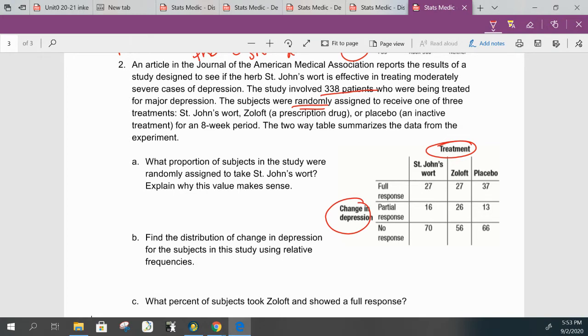Okay, so up here at the top we have treatment, and on the side we have change in depression. Those are our two variables. We have levels based on the type of drug or the level of depression response. So our first thing that we want to do is summarize the table. Well, they told us there's 338, so we know 338 goes over here.